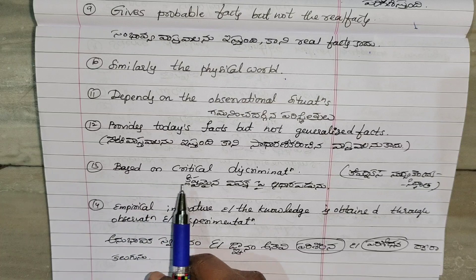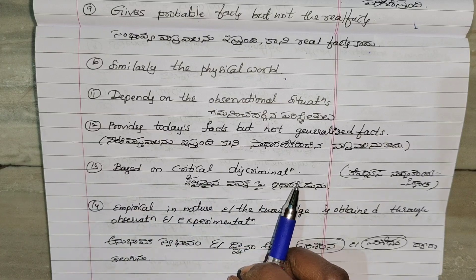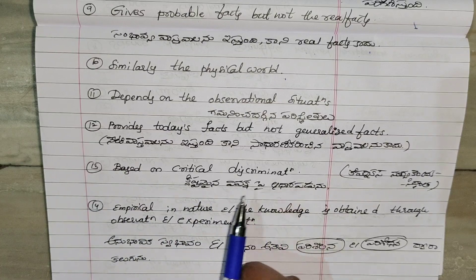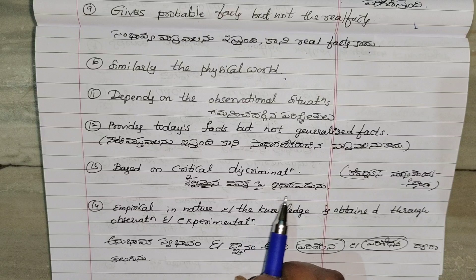Science is based on critical discrimination. Science depends on the observational situations.